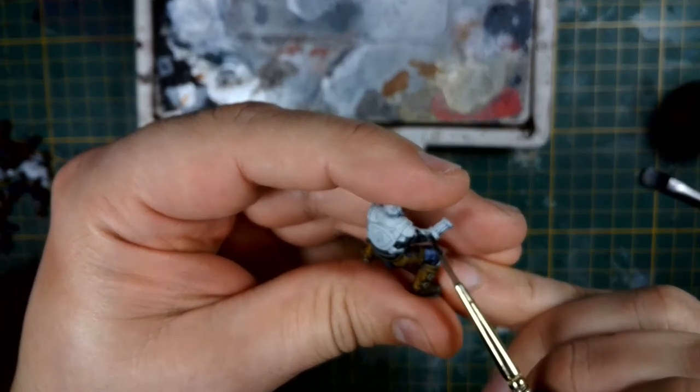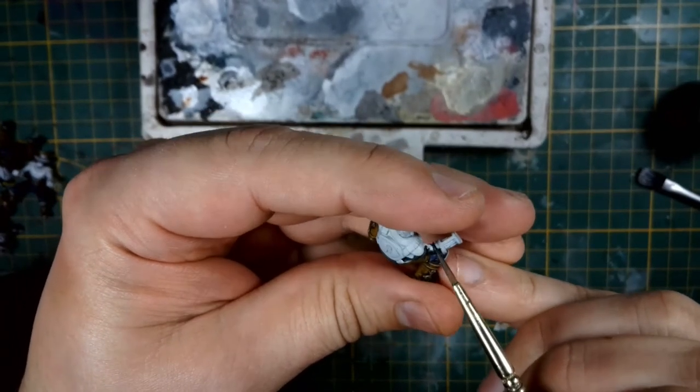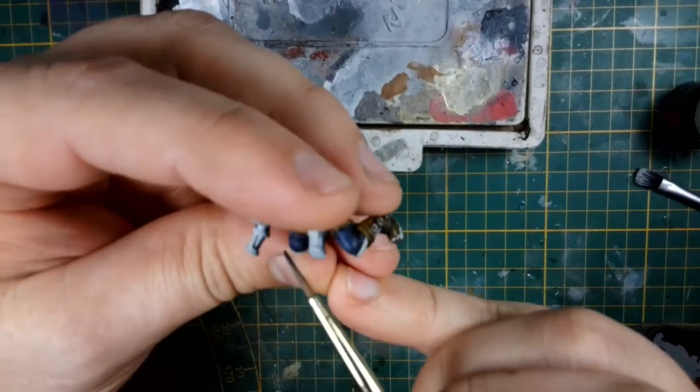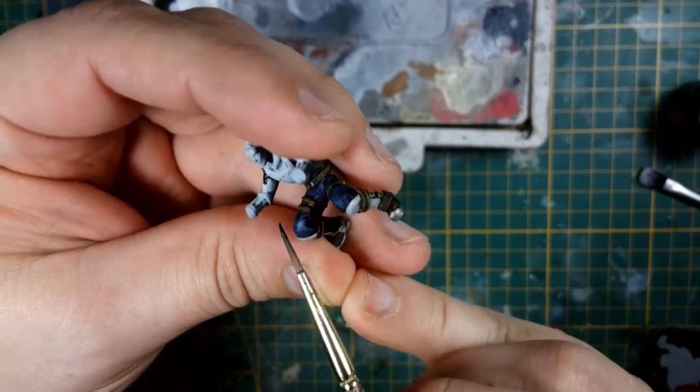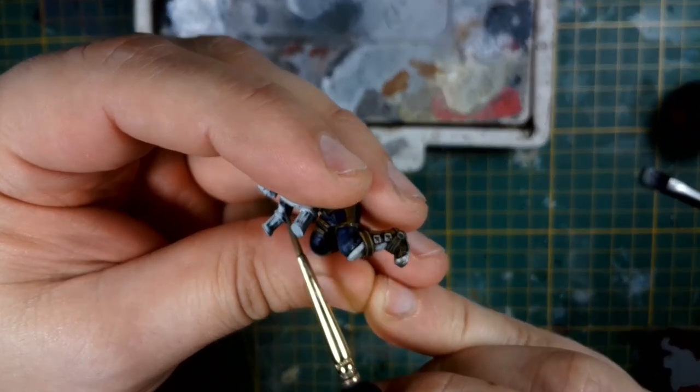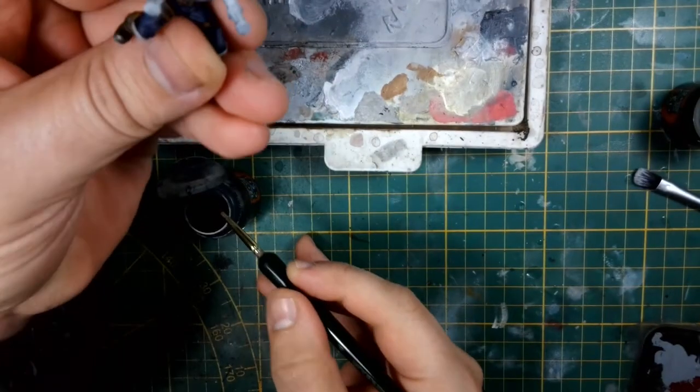I'm using Black Templar, it's a great contrast paint to apply over this zenithal primer to pick out his dark leather jacket that he's wearing. I basically just go all around the model until the contrast paint is all neatly dry before we can continue.